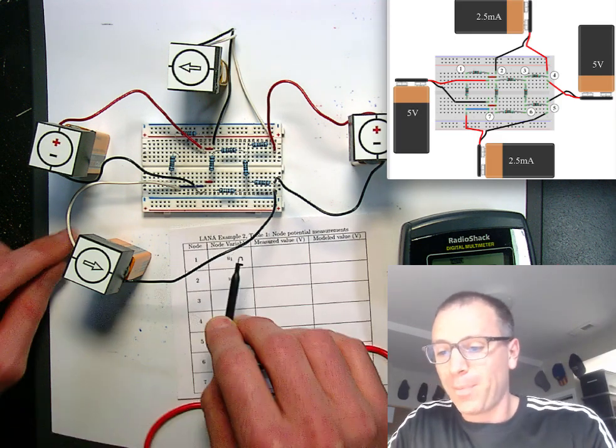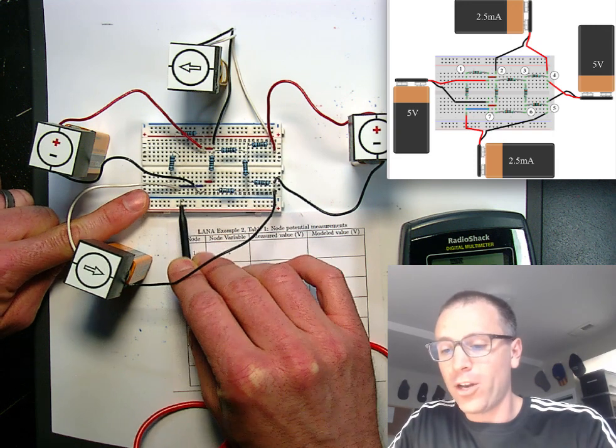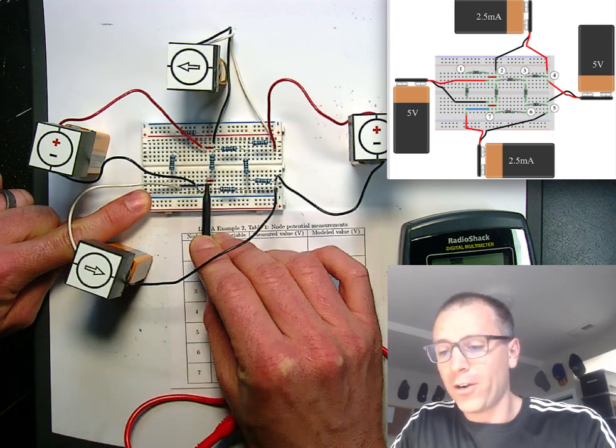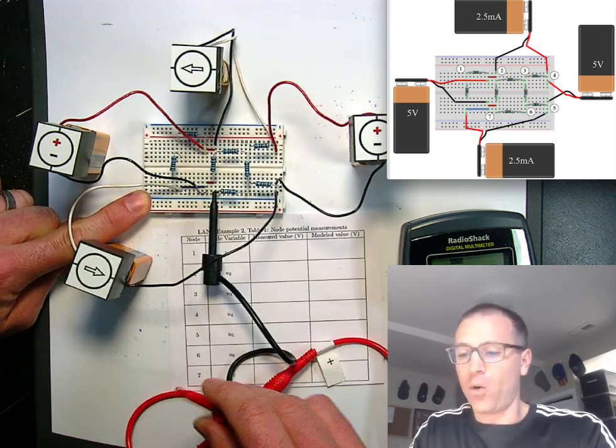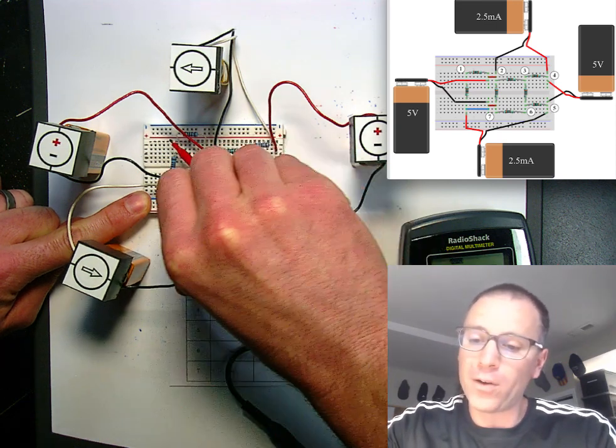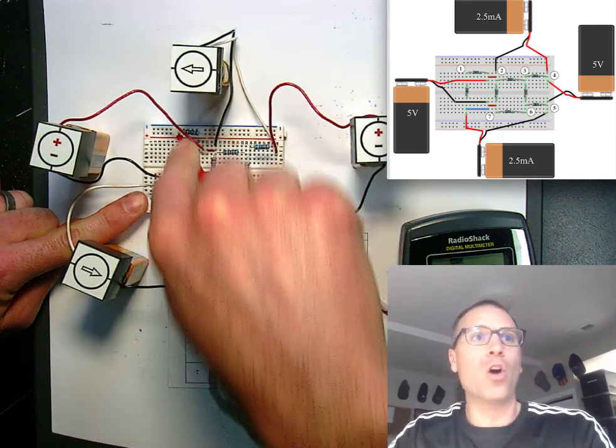So I attach my negative lead anywhere in node 7, that includes the bottom wires here, and then I'm going to go ahead and move my positive lead around up top. So let's go to node 1 first.